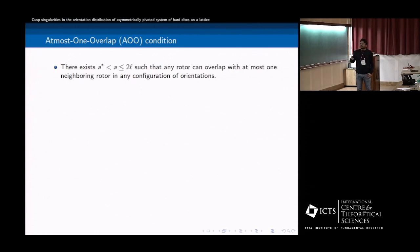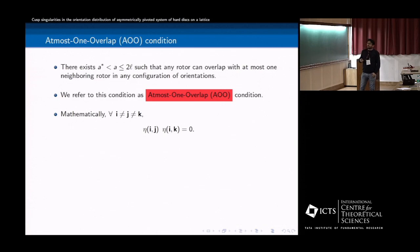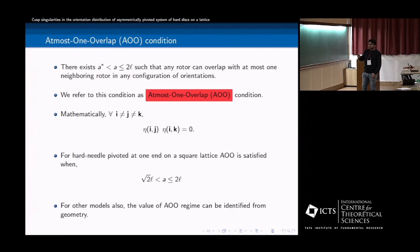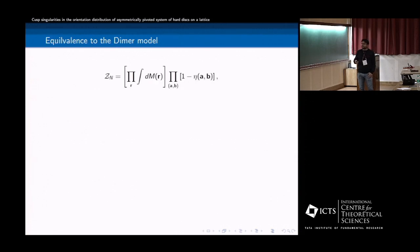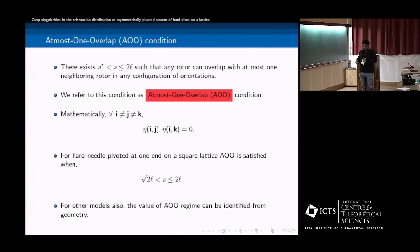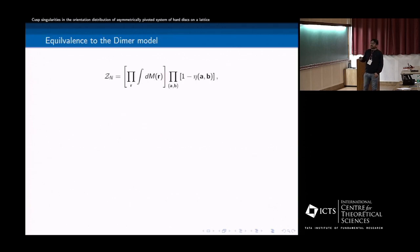So let us discuss this at-most-one overlap condition. So what is it? So there can exist some regime of lattice constant where it can only interact with only one neighbor. So mathematically what it means, for example, you take three distinct sites A, I, J, K, and this product is zero, the overlap function, this is zero, always zero. And it actually simplifies the partition enormously. And for this hard needle pivoted at one end, this regime is here. And for other models, you can find it out using simple geometrical arguments.